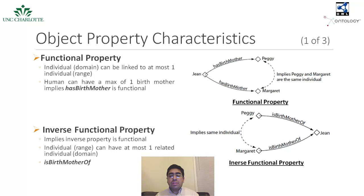If a property is inverse functional, then it means that the inverse property is functional. Therefore, for a given individual as range, an inverse functional property can have a maximum of one individual defined as the domain of the property. The figure shows an example of an inverse functional property is birth mother of. This is the inverse property of has birth mother. Since has birth mother is functional, is birth mother of is inverse functional. If we state that Peggy is the birth mother of Gene, and we also state that Margaret is the birth mother of Gene, then we can infer that Peggy and Margaret are the same individual.